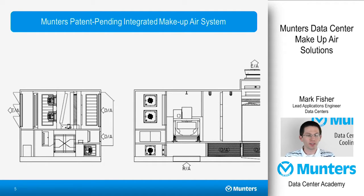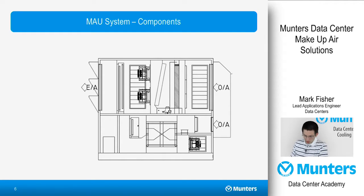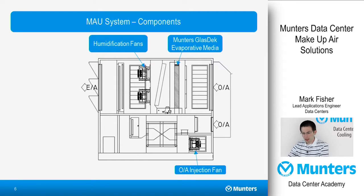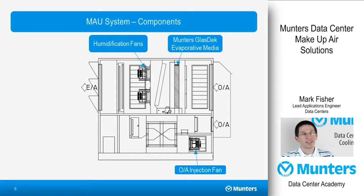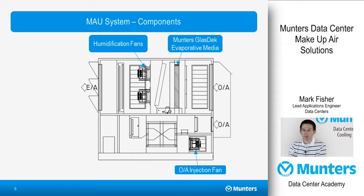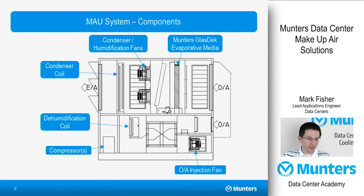This slide shows Munters' patent-pending integrated makeup air module system and its attachment onto a typical rooftop recirculating air handler. The basic makeup air system consists of the following components: an outdoor air injection fan to push the outside air into the recirculating air handler, and a Munters glass deck evaporative media section to provide humidification in an energy-efficient way. We do this by taking return air from the air handler that's already heated from the data center and cooling it evaporatively, adding humidity without requiring any extra energy to heat up the air or water beforehand. The humidification fans then insert the air back into the recirculating air handler. In climates where outside air requires dehumidification, we can add a dehumidification coil, condenser coil, and compressors.